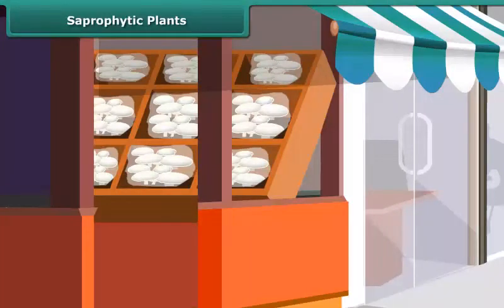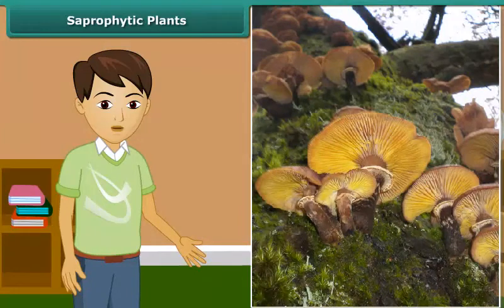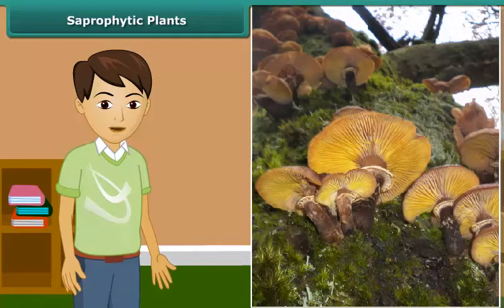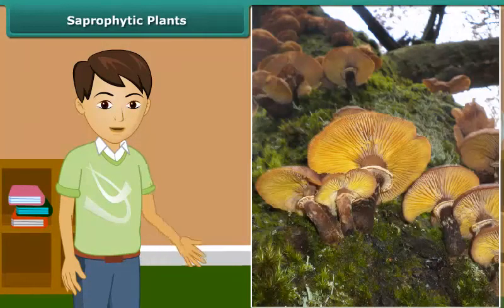When you go to a vegetable shop, you might have seen packets of mushrooms sold in it. Besides that, sometimes you may have also seen fluffy umbrella-like patches growing on rotting wood during rainy season. But do you know what these organisms are and how they get their nutrition?